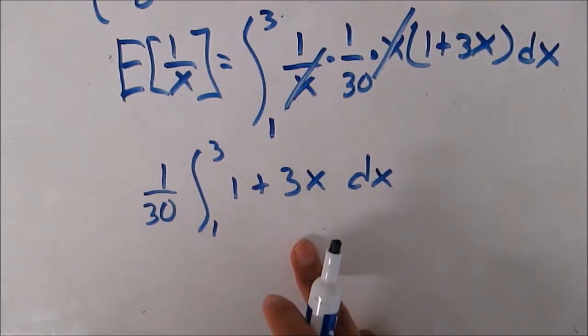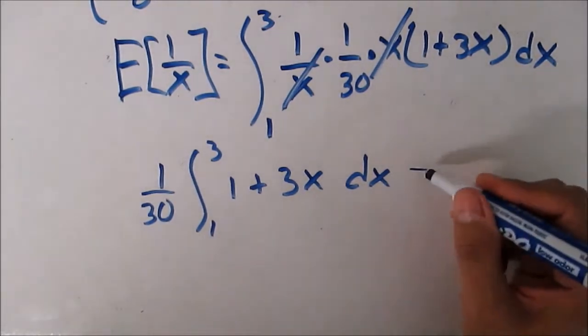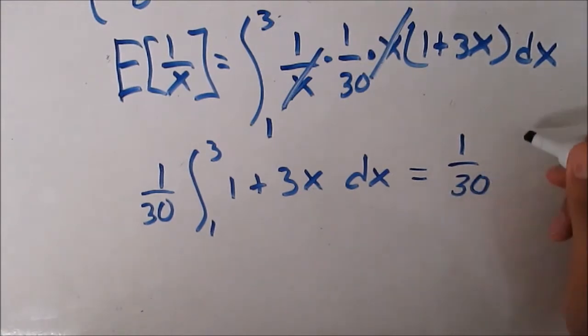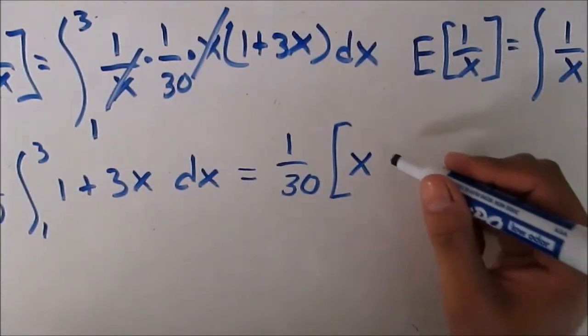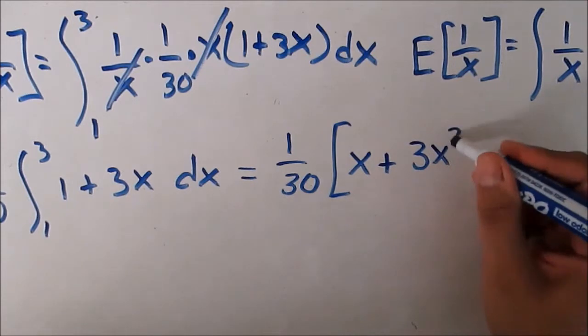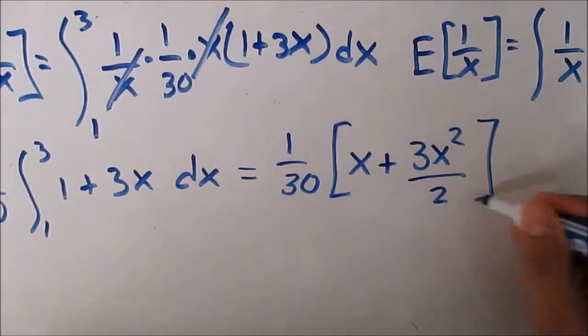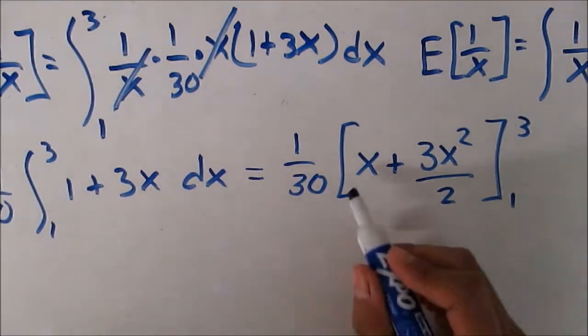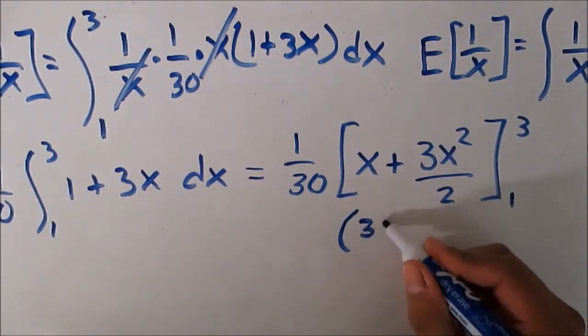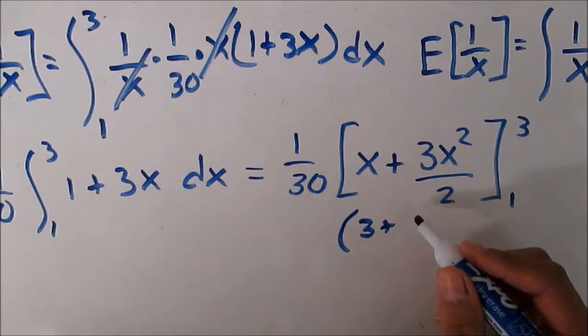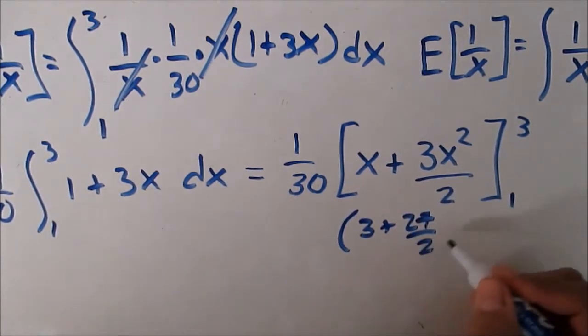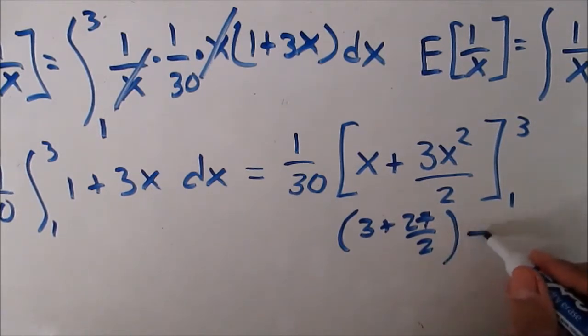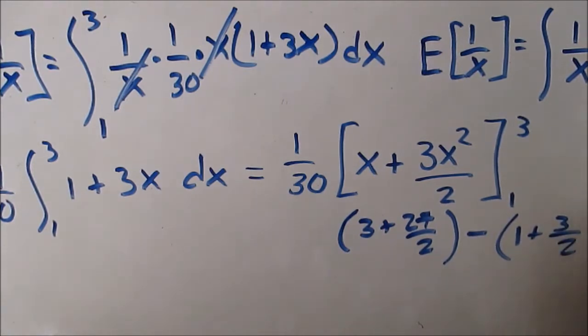And then from here just integrate it like you normally would. So that's 1 over 30 on the outside and then the integration would make that x plus 3 x squared over 2 from 1 to 3. Okay, and then from here just plug it in. So that's 3 plus 3 squared is 9 times 3 is 27 over 2 minus 1 plus 1 squared which is 1 times 3 so 3 halves.